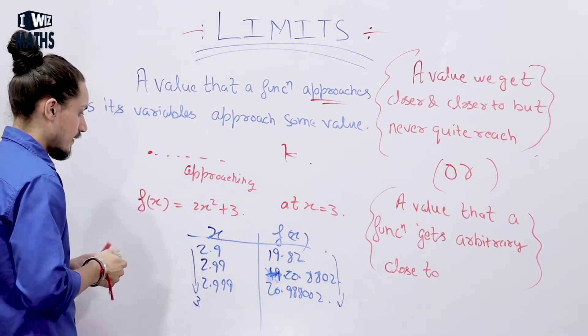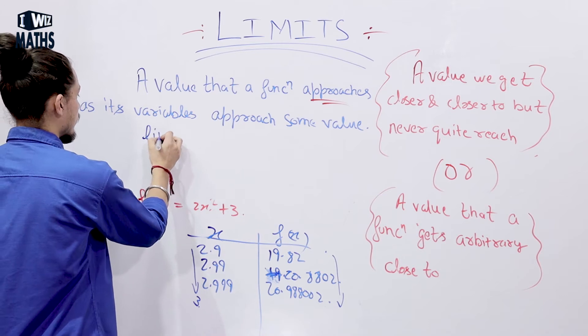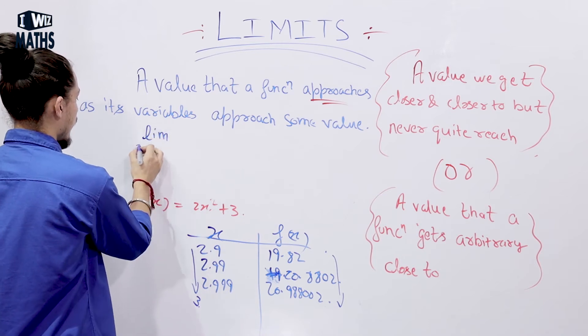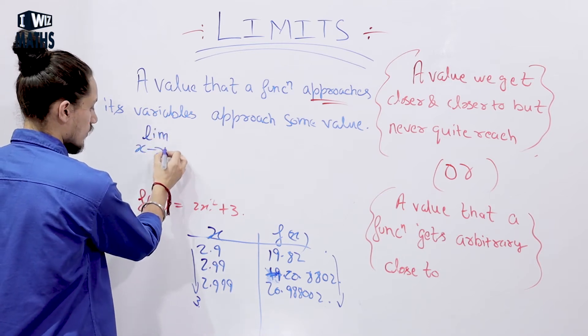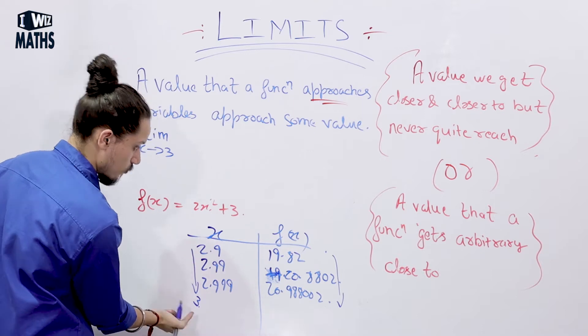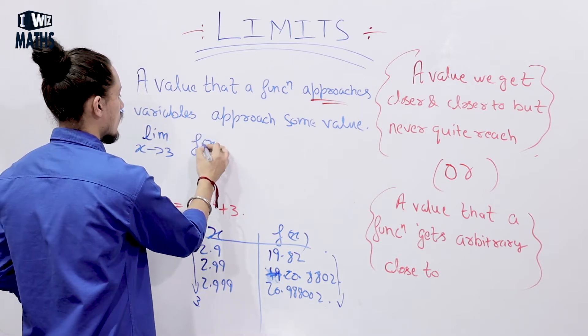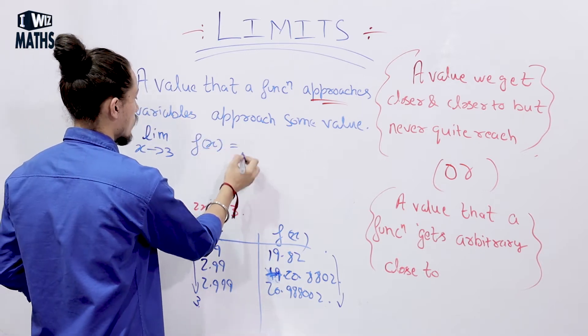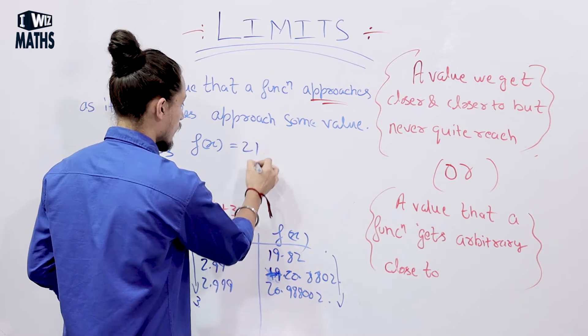So I can write it mathematically as: the limit as x approaches 3 of this function is approaching the value 21.